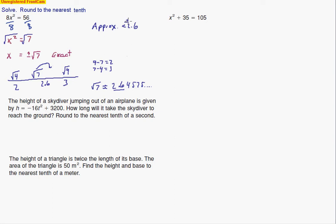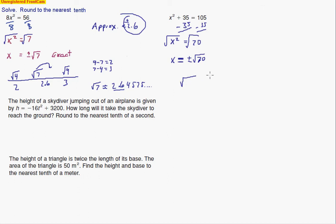That's plus or minus 2.6. On the next one, we're subtracting 35 from both sides, leaving x squared equals 70. When I take its square root, it's not a perfect square, so we get x equals exactly plus or minus the square root of 70. We want to approximate this and understand where it is. We look at the perfect squares in between: 9 times 9 is 81, and the square root of 64 is 8. So the square root of 70 is in between these two perfect squares, between 8 and 9. To figure out which one it's closer to, take the differences: 70 minus 64 is 6, and 81 minus 70 is 11.